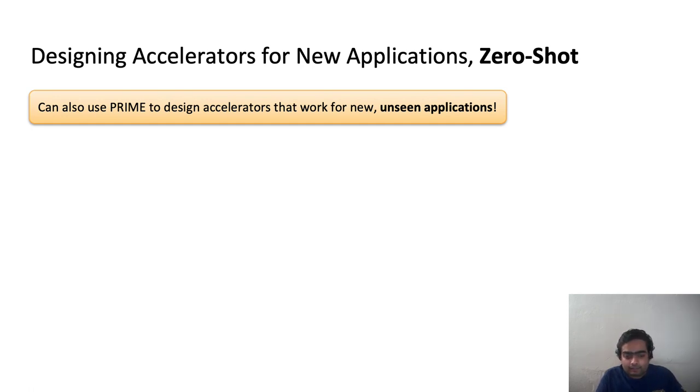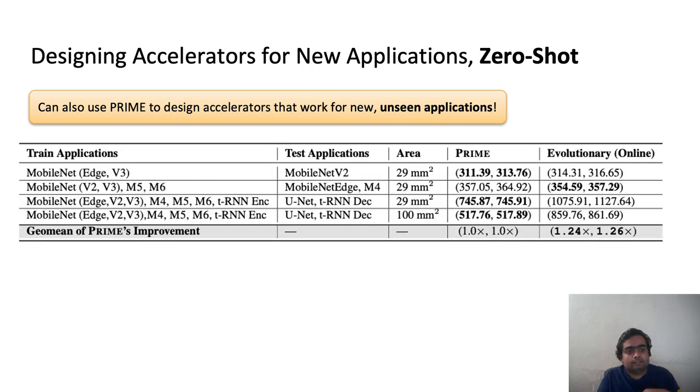Turns out that the same contextual model that I described on the previous slide can actually accelerate these new applications as well. So in this table that you see, we trained PRIME on only a subset of the applications which is shown in the train applications column, and we evaluated the performance of PRIME when accelerating unseen test applications. So the test applications column.